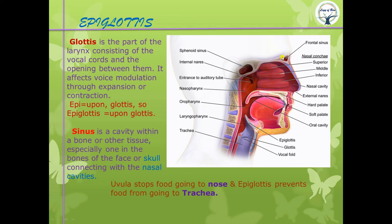Sinuses are holes in the bones of the skull. They lighten the skull and produce mucous membrane that moisturizes the inside of the nose. This mucus layer protects the nose from pollutants, microorganisms, dust, and dirt.